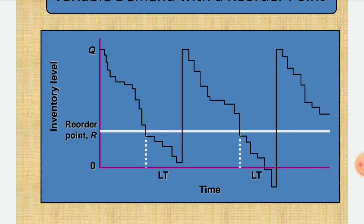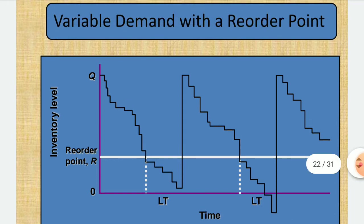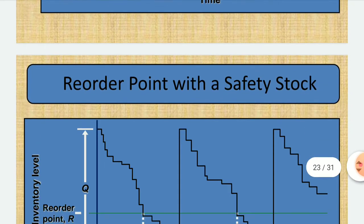Variable demand with reorder point: this follows graphs we have seen in inventory models. Q is the daily quantity. When inventory reaches the reorder point R, we place a new order. After the lead time, the order quantity arrives and inventory returns to Q. Then it decreases again and the cycle repeats. Another important concept here is safety stock.